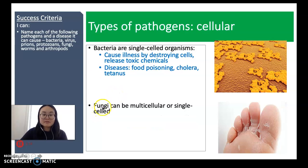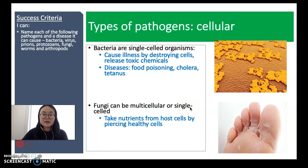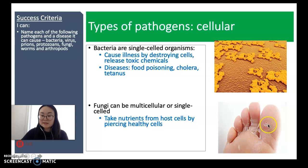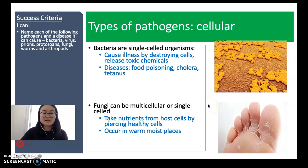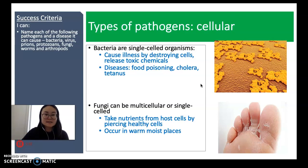Let's have a look at fungi. Fungi can be multicellular — made up of more than one cell, unlike bacteria — or they can be single-celled. They take nutrients from host cells, such as a human, by piercing healthy cells. We can see here that the fungi has pierced these healthy cells and is using the nutrients from this person's foot. Fungi occur in warm, moist places like feet or areas prone to moisture. An example of a fungal disease is athlete's foot.